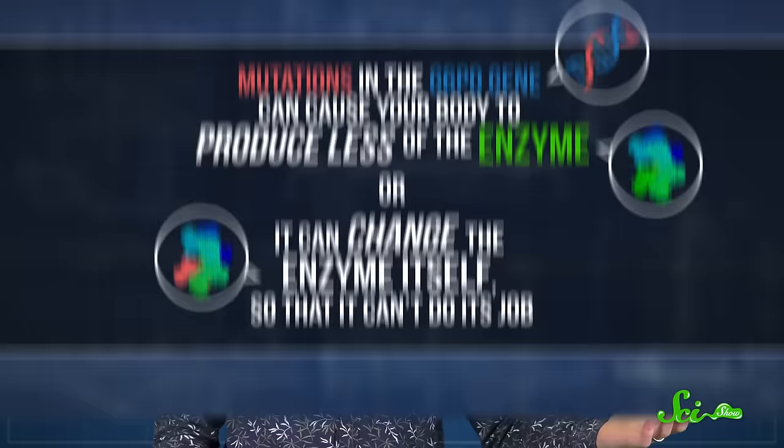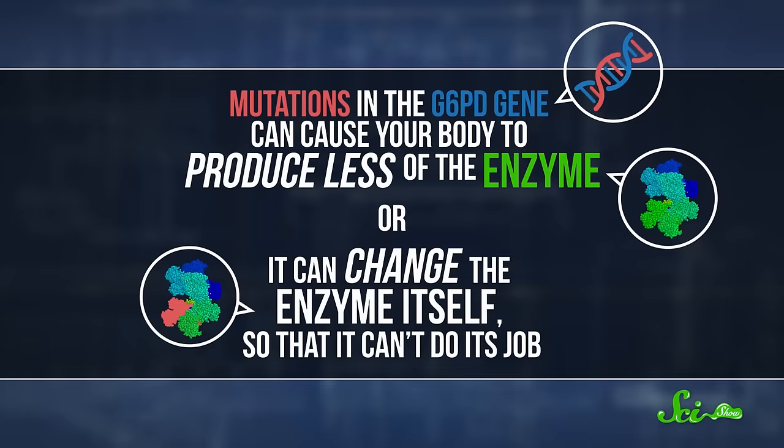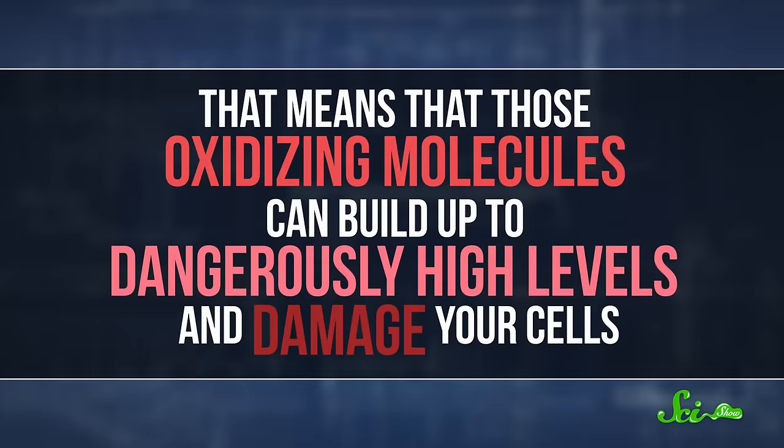Fortunately, G6PD is normally there to neutralize these oxidizing molecules. But mutations in the G6PD gene can cause your body to produce less of the enzyme, or it can change the enzyme itself so that it can't do its job. That means that those oxidizing molecules can build up to dangerously high levels and damage your cells.